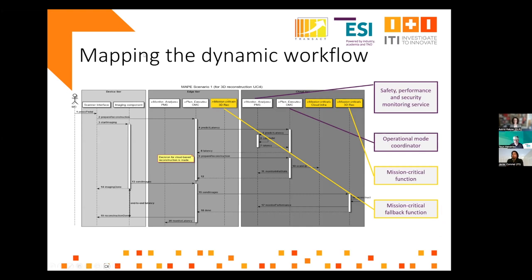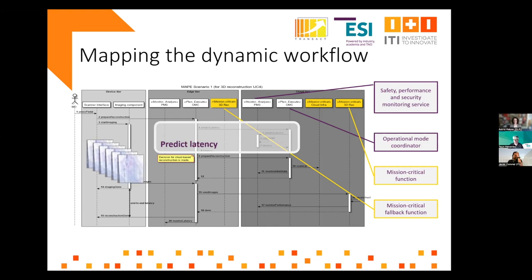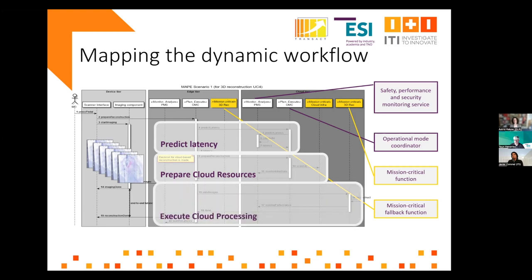Let me show you two scenarios from the reference architecture work. In scenario one, we look at the device-edge where the mission-critical fallback is organized, and the cloud. The safety, performance, and security monitoring services provide the monitoring and analyzing functions. In the normal scenario, we check if the cloud is available and what the latency will be. I start the scan, collect images, and if everything is okay, I go to the cloud, prepare cloud resources, possibly spin up a virtual machine, reserve capacity, execute the cloud processing, and the result comes back to the device.